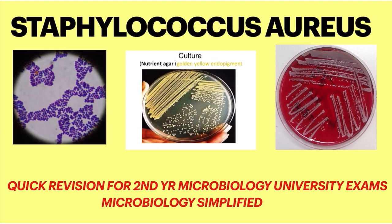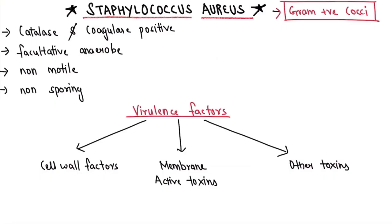Let's start with Staphylococcus aureus. It is a Gram-positive cocci, and catalase and coagulase positive. It is a facultative anaerobe, non-motile and non-sporing. These are the basics of Staph. aureus.